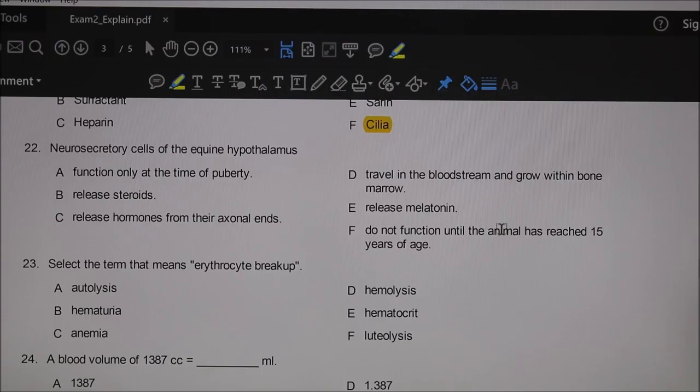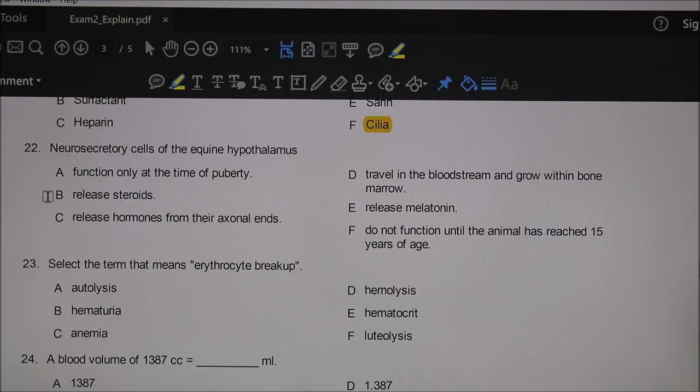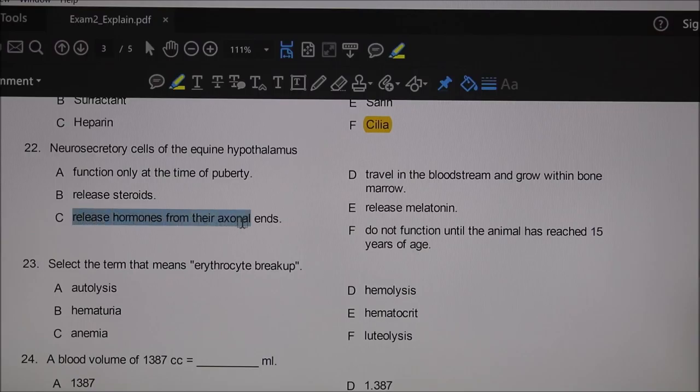Twenty-two: people had questions on this. Neural secretory cells of the equine hypothalamus—let's go through the possible answers. Function only at the time of puberty? No. Release steroids? Nothing in the hypothalamus releases steroids. C is pretty good: release hormones from their axonal end.